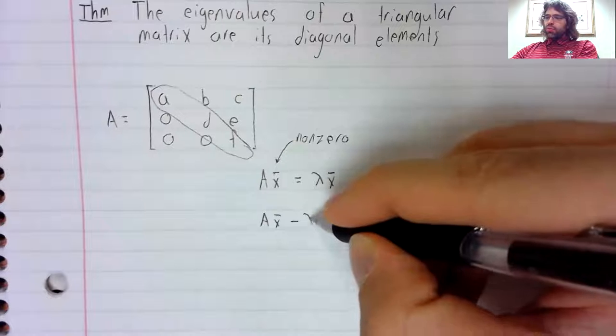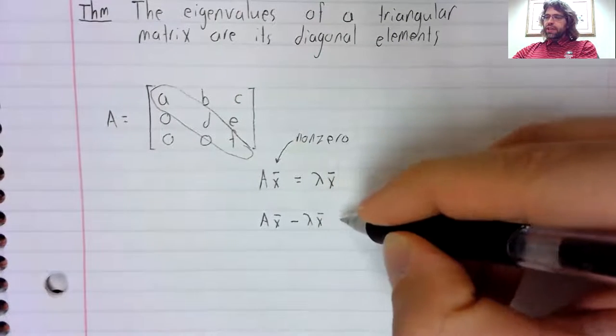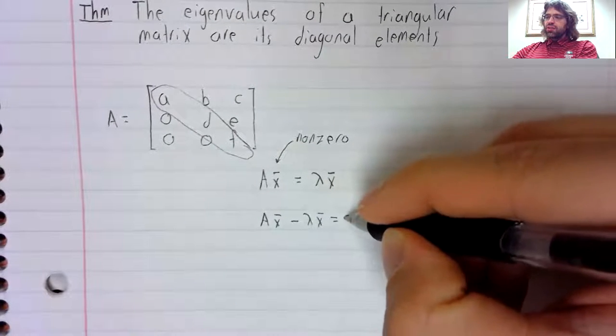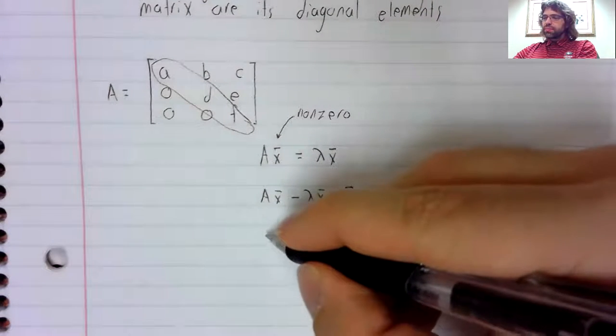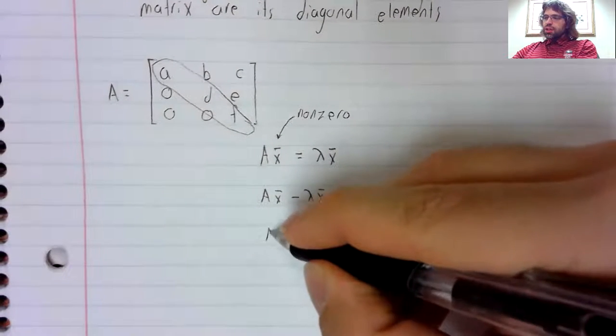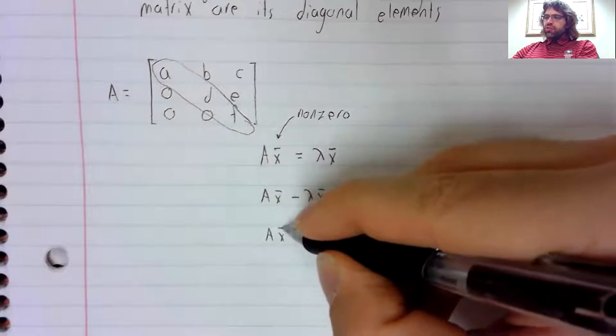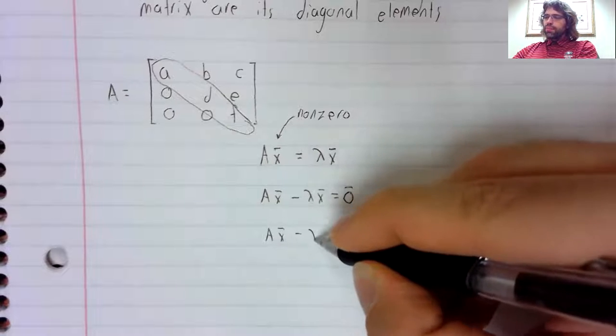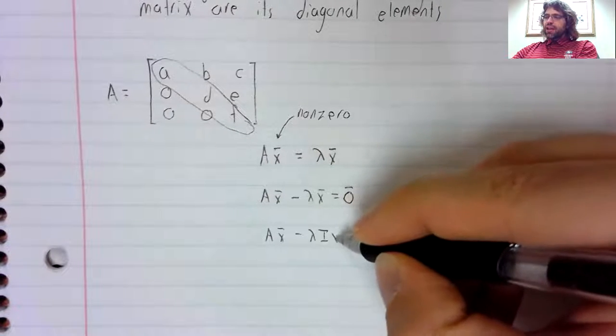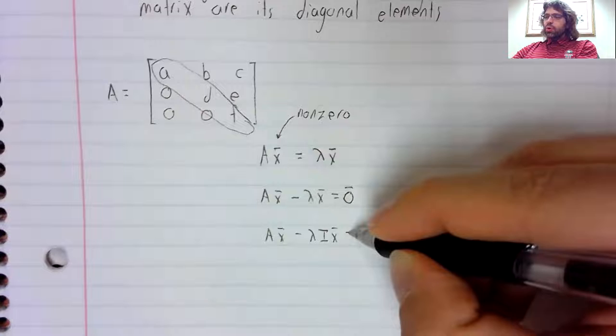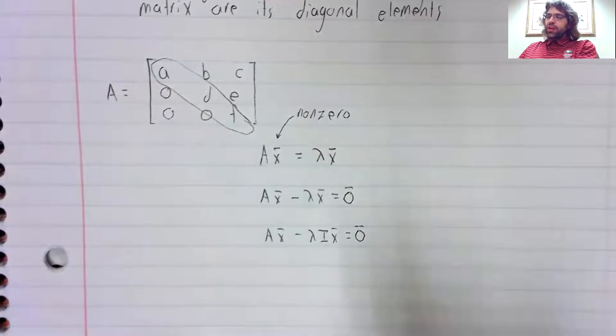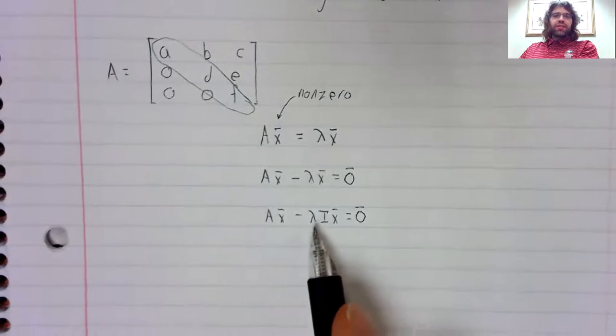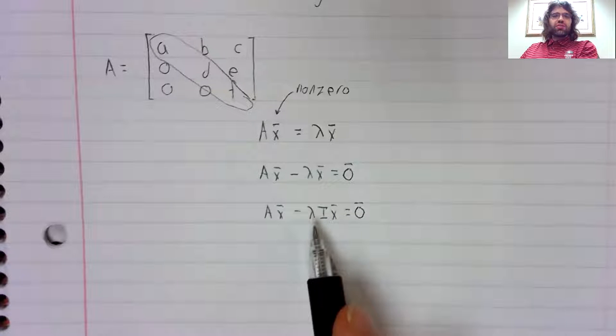We'll pull the lambda x to the left. Our goal is to pull an x out. We can multiply an I in. Multiplying by the identity matrix doesn't do anything.